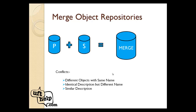Another type of conflict is identical description — where objects have identical description but different names. For example, suppose we are working on a Gmail application and we have a username textbox. It's present in both the primary and the secondary object repository, and we have used the same description properties, but the name is different — one is 'username' and another is 'user_name'. The tool will flag these as conflicts. A third type of conflict is similar description, where objects have similar but not identical descriptions.